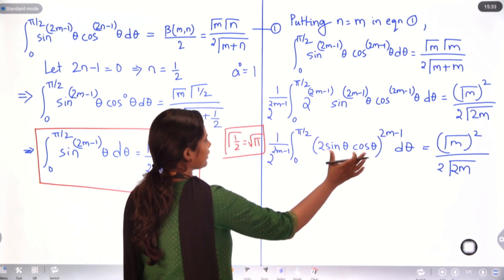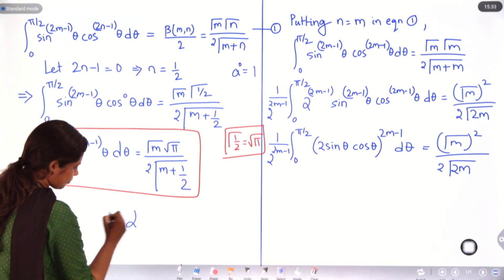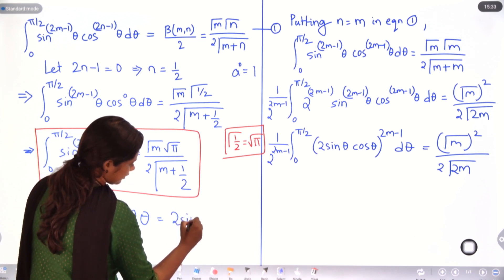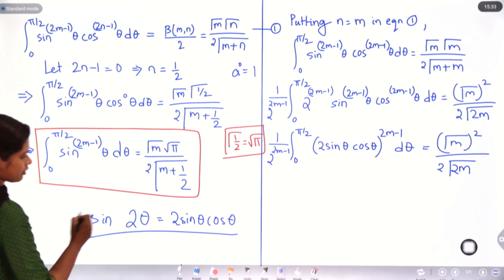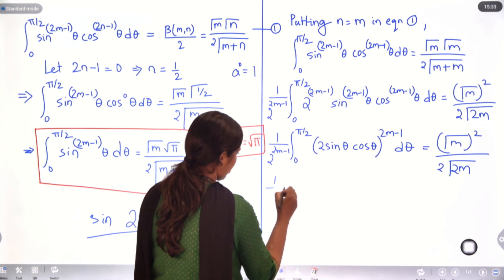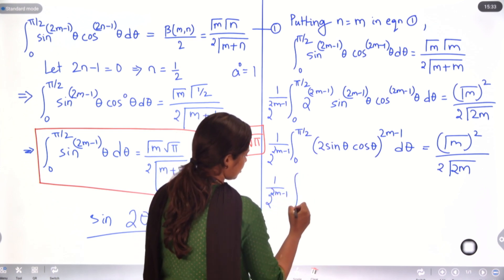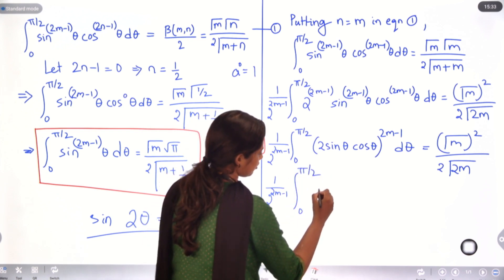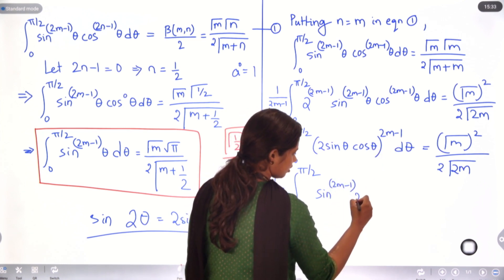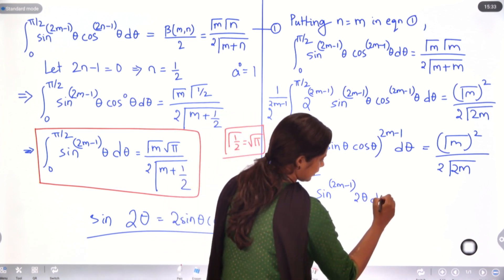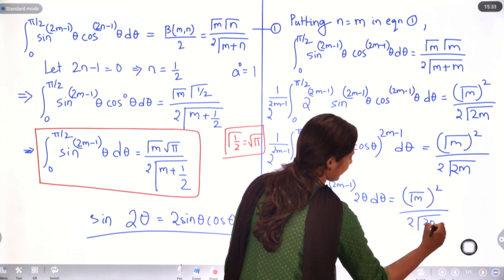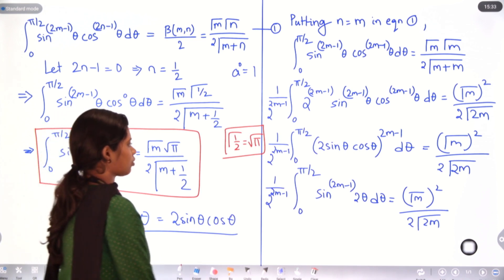The value of this: from trigonometry we know that sin2θ = 2sinθ cosθ. So we can replace 2sinθ cosθ with sin2θ, giving: (1/2^(2m−1)) · ∫₀^(π/2) sin^(2m−1)(2θ) dθ = [Γ(m)]² / [2·Γ(2m)].